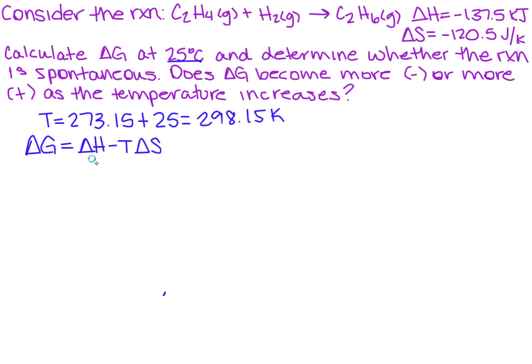Now, when you do the plug and chug, remember the units are different for delta H and for delta S, so I need to either put everything in joules or everything in kilojoules. The preference is to go to joules, so you need to go ahead and convert negative 137.5 kilojoules into joules. There's 1,000 joules in one kilojoule, so this would be minus 137,500 joules.